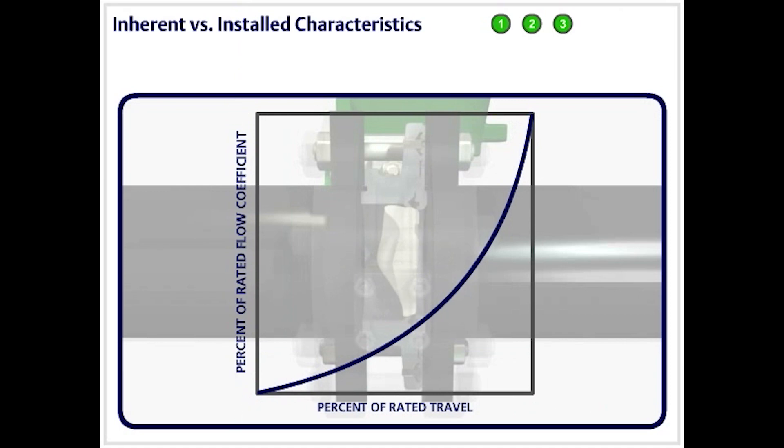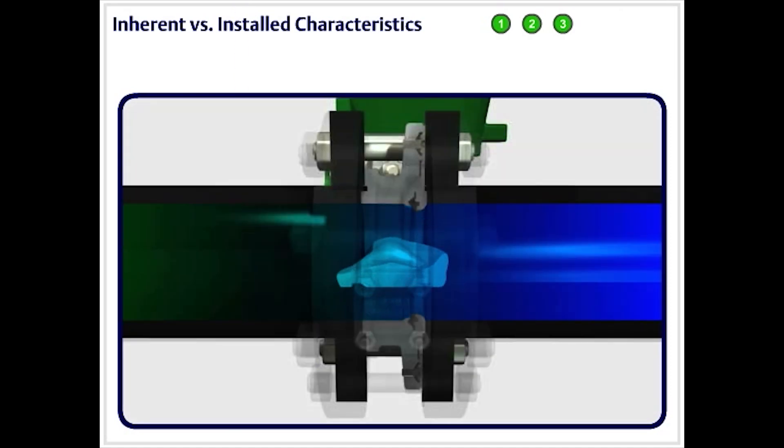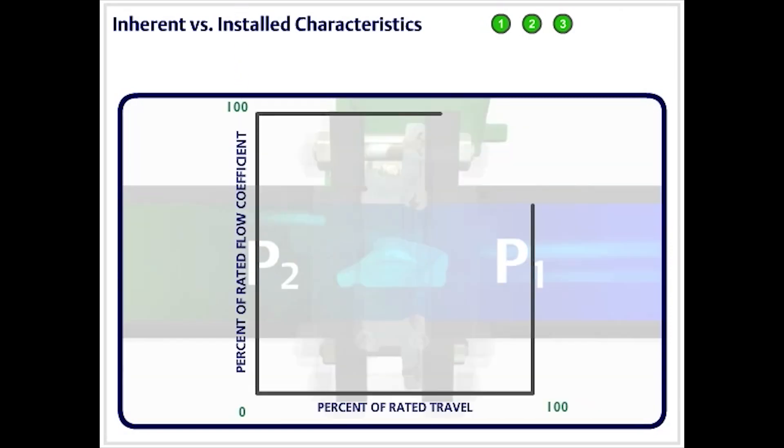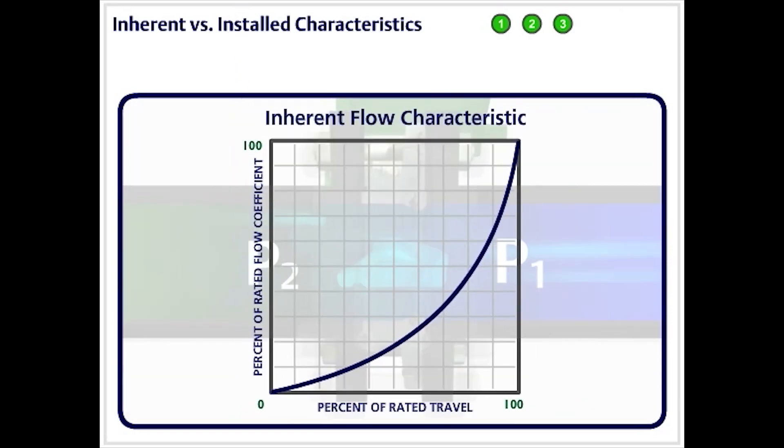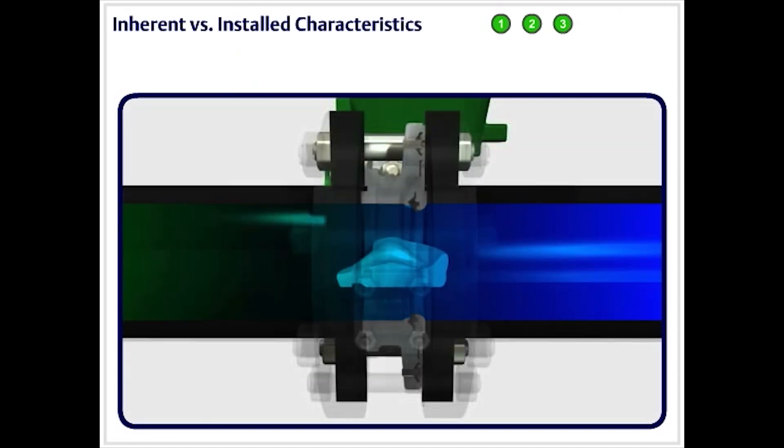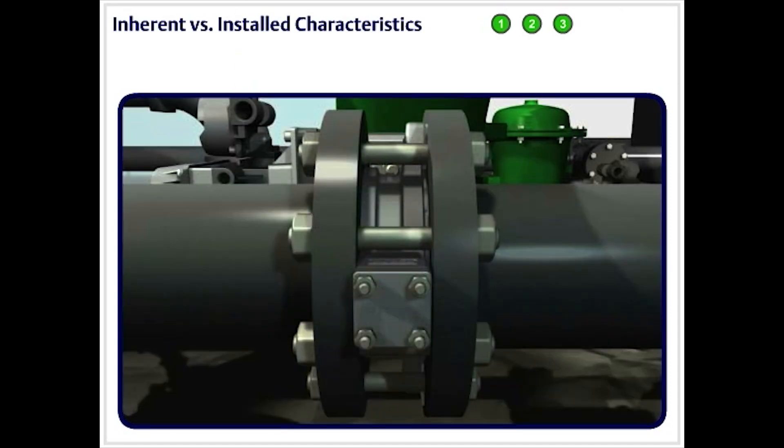The inherent flow characteristic is determined by a standard flow test, in which the only variable is a change in valve travel, going from fully closed to fully open. While the inherent flow characteristic is important for sales catalog purposes, it is the installed flow characteristic that is important to control of the process.